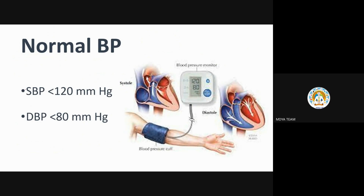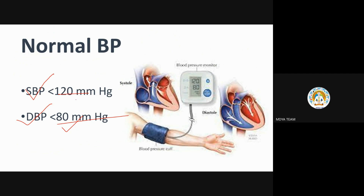Normal blood pressure: SBP should be 120 and DBP should be 80 mmHg. Though for females, a slightly lower diastolic — around 75 — is also considered acceptable. MMHG stands for millimeter of mercury, as mercury is used in the sphygmomanometer. In the periodic table, mercury is represented by Hg, so MMHG means millimeters of mercury.